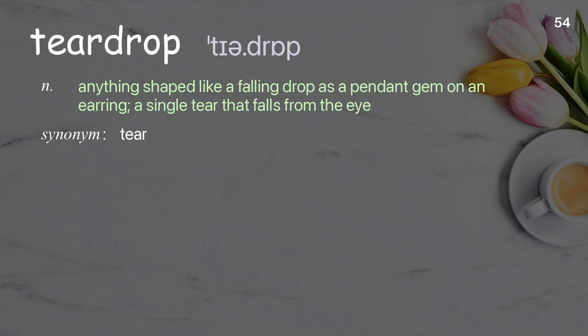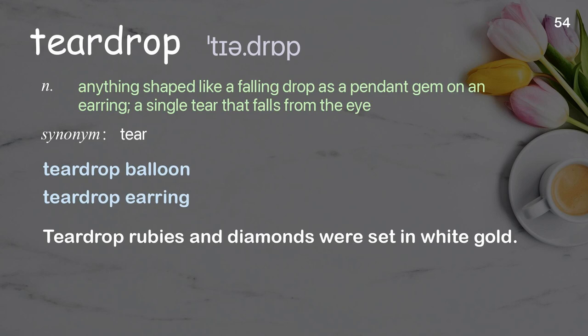Teardrop: Anything shaped like a falling drop, as a pendant gem on an earring, or a single tear that falls from the eye. Examples: Teardrop balloon, Teardrop earring. Teardrop rubies and diamonds were set in white gold.